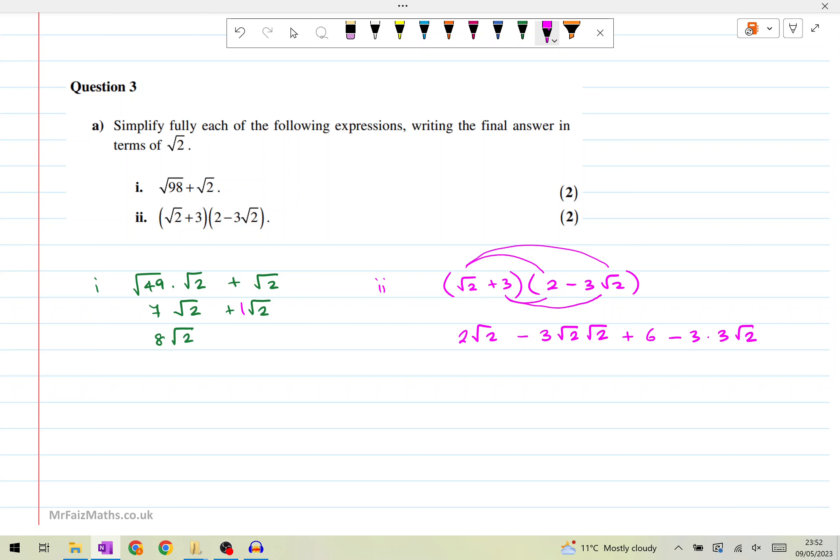So simplifying all of this, this should give us two square root of two. These two terms, root two times root two gives us two, so that's minus six because three times two, that gives you minus six, plus six, and three times three here gives us nine. So that's minus nine root two. So the minus six and plus six will cancel. So two root two minus nine root two, that would give us minus seven root two. So that's both part one and two written in terms of just square root of two.